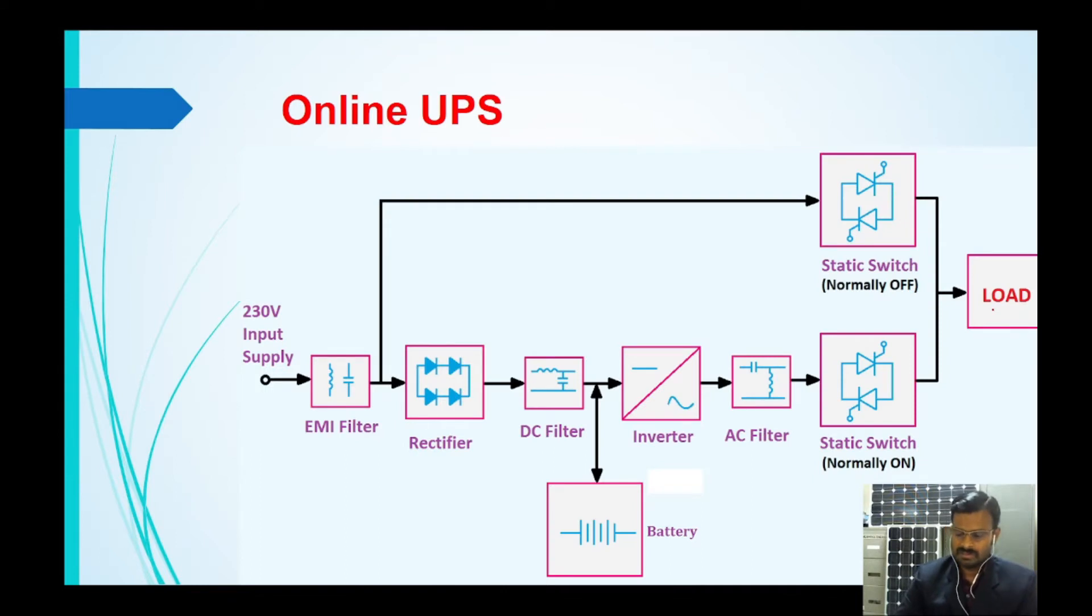Online UPS has three different types: line interactive type of UPS, double conversion UPS, and delta conversion UPS. In this video we are going to see about online UPS which is of line interactive and double conversion type.